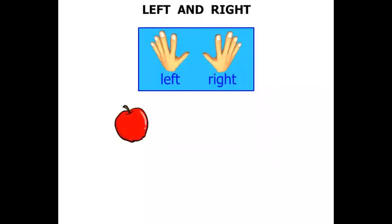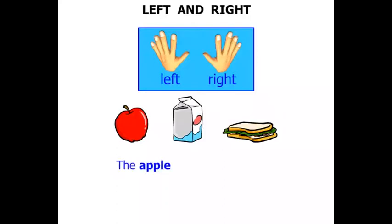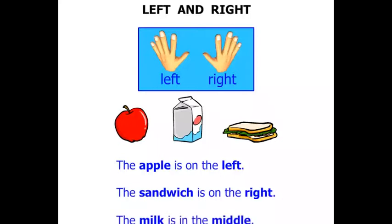So if we have an apple, a milk carton, and a sandwich. We could say that the apple is on the left. The sandwich is on the right. What about the milk? Well, the milk is in the middle.